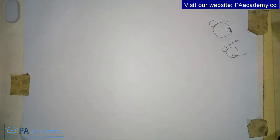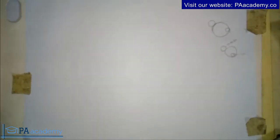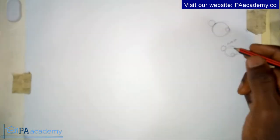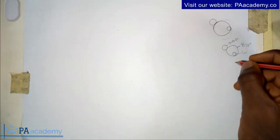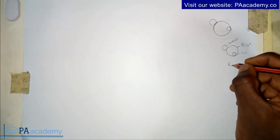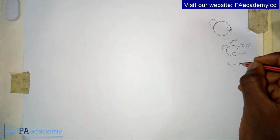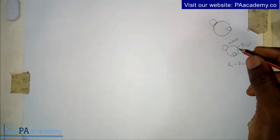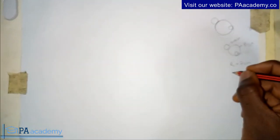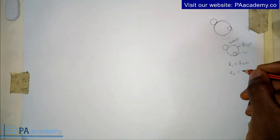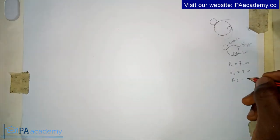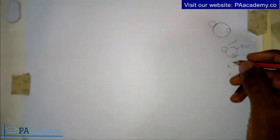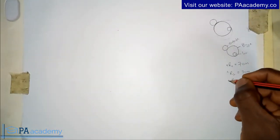In order to do this, let me give you the radius values we are going to be using. Since we have three circles, we are going to have three radii. R1, the bigger circle, will have a radius of seven centimeters. R2 will have a radius of three centimeters. And R3 will have a radius of two centimeters.